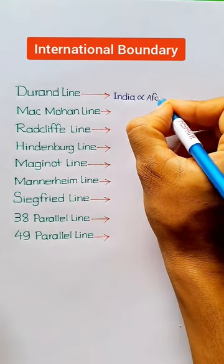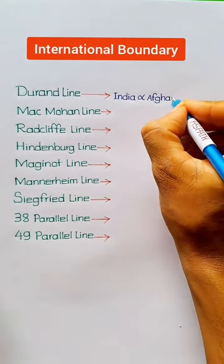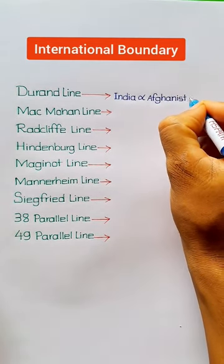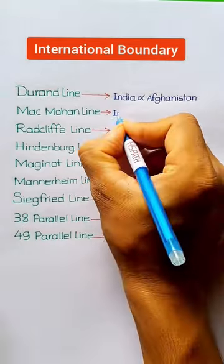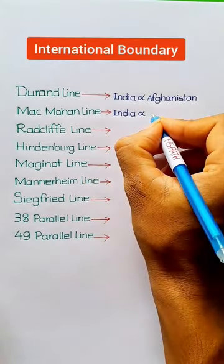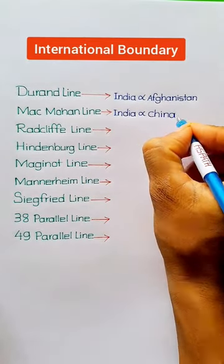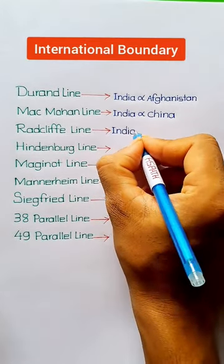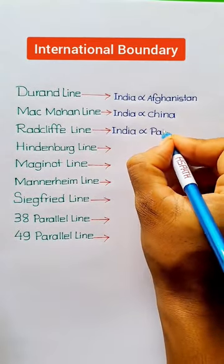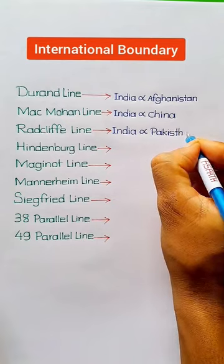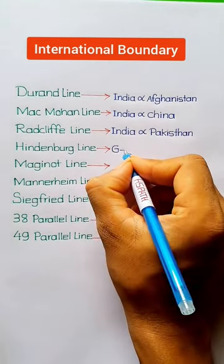International Boundaries: Durand Line — India and Afghanistan. McMahon Line — India and China. Radcliffe Line — India and Pakistan.